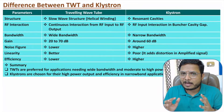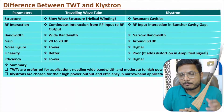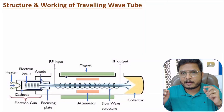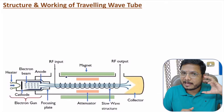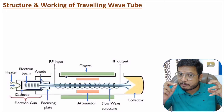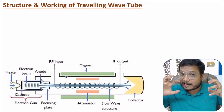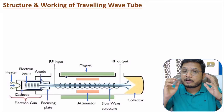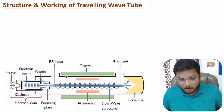Now I'll explain the structure and working of the traveling wave tube. It comes under the linear beam category. In the linear beam category, at one end we have an electron gun radiating an electron beam linearly, and at the other end we have a collector receiving the electron beam.